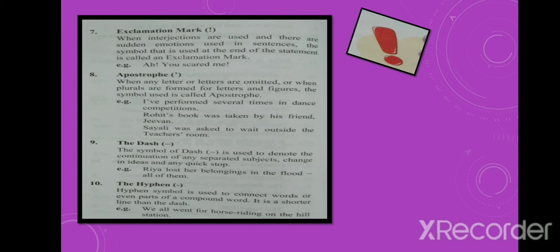Eighth, apostrophe. When any letter or letters are omitted, or when plurals are formed for letters and figures, the symbol used is called apostrophe. For example: I've performed several times in dance competitions. Rohit's book was taken by his friend Jeevan.